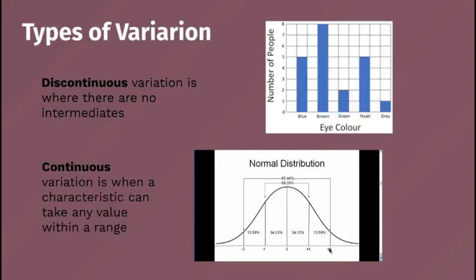These two types of variation are presented differently in graphs. Discontinuous variation — such as eye color in 100 people — is best shown on a bar chart, separating data into distinct groups. Continuous variation is shown on a histogram, which typically displays a normal distribution: the majority of people cluster in the middle, with smaller and smaller proportions towards the extremes. Continuous characteristics are also often influenced by environmental factors in addition to multiple genes.